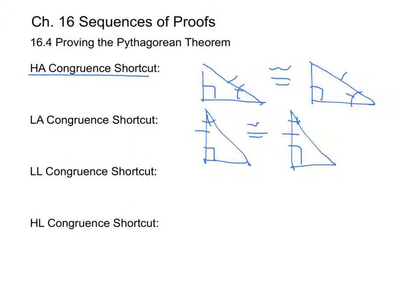Then we have the LL congruence shortcut, which says that if the two legs of a right triangle are congruent to two legs of a second right triangle, then the two right triangles are congruent. So if you're given two right triangles and you're told that the legs are congruent, then you can automatically assume that the triangles are congruent.